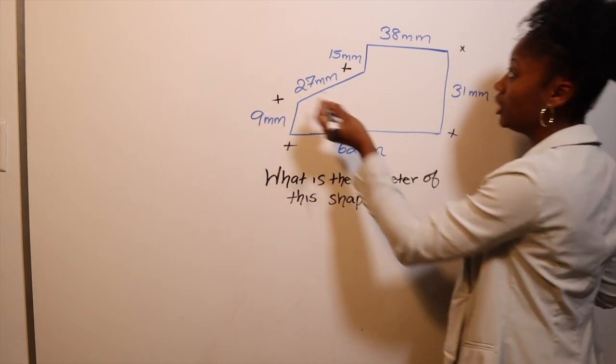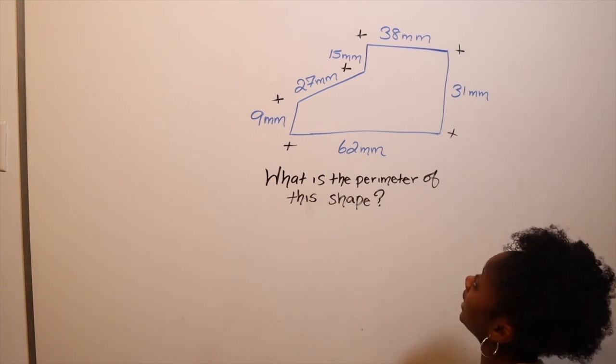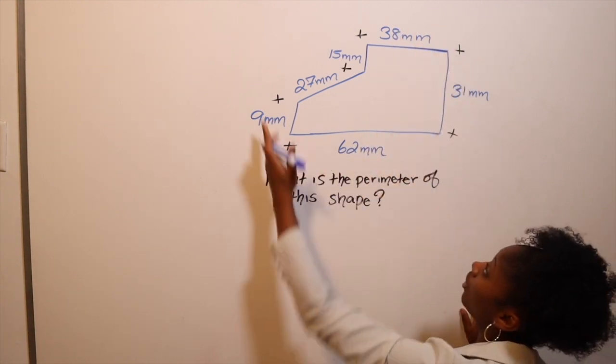Okay, so we're going to write it in order here. We can do this without a calculator. I know it's easier said than done. We're going to start from here and write all of these numbers down.